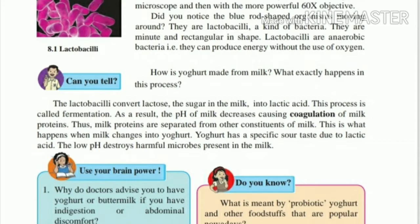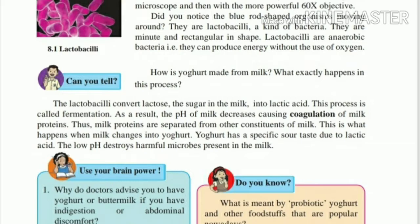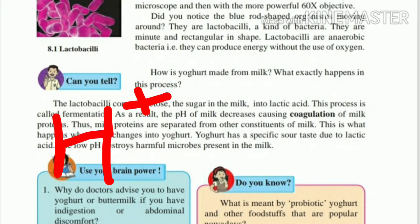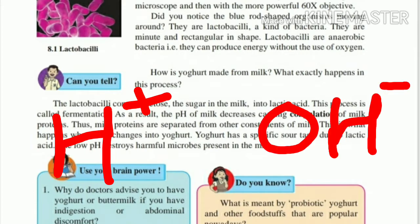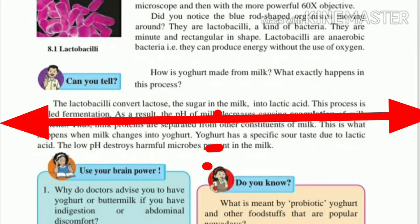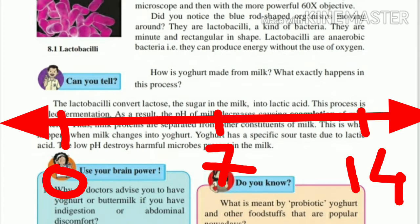pH is a scale — it stands for 'potential of hydrogen atom'. Substances are of two types: acids and bases. Acids release hydrogen (H) atoms, while bases release OH atoms. On the pH scale, values from 0 to 7 are acidic, and values from 7 to 14 are basic. A compound with pH 9 is basic, while a compound with pH 6 is acidic.